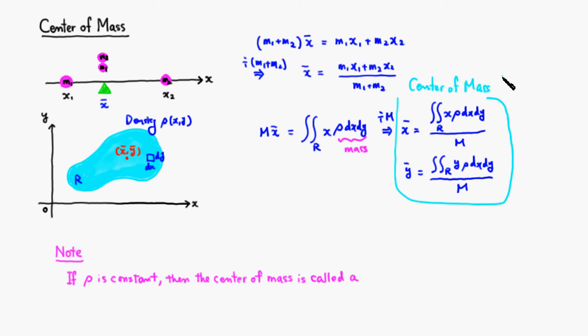If the density is constant, you can think of it as 1 or something like that. Then the center of mass is called a centroid. So if somebody is asking for a centroid, this is exactly the same thing as the center of mass of the same region with constant density. That's it. I hope that this was clear.